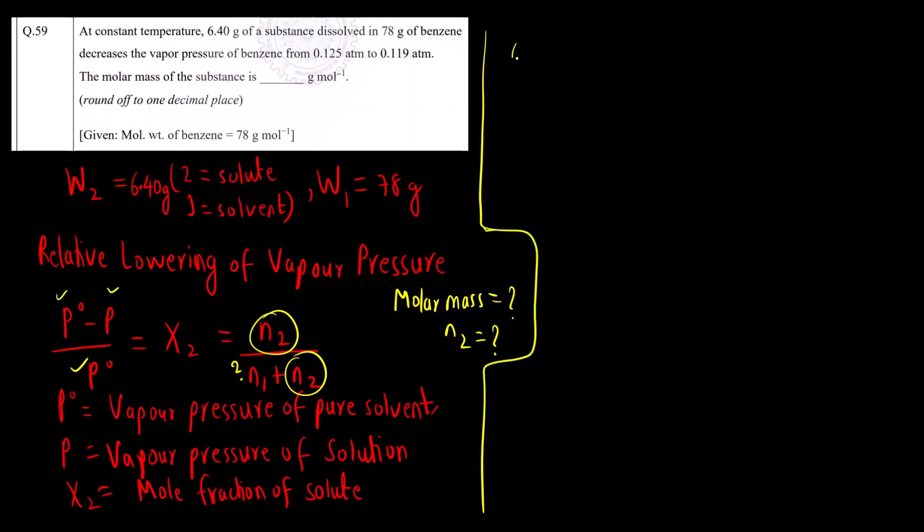What is P0? 0.125 minus P, which is vapor pressure of solution after lowering, 0.119, divided by P0, 0.125 atmosphere, equals N2 over 1 plus N2. We have to find N1. How do you find moles of any substance? Mass, 78 grams, divided by molar mass of benzene, 78 grams per mole.